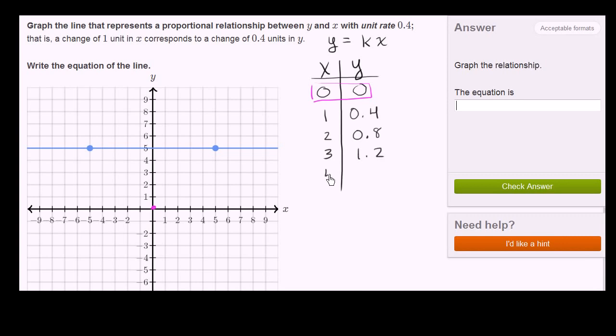If x increases again, y is going to increase by 0.4 again, so it's to 1.6. Notice every time x is increasing by 1, y is increasing by 0.4. That's exactly what they told us here. Now if x increases by 1 again to 5, then y is going to increase 0.4 to 2.